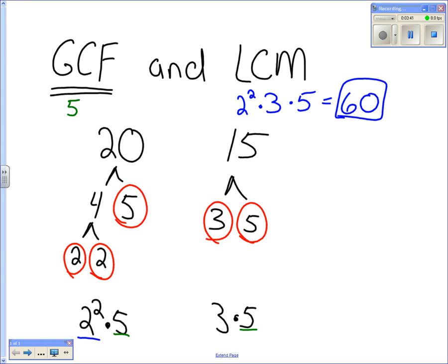We took the 2², we took the 5, then we took the 3. Okay. Remember, this is bigger than 15 and 20. So, we're looking for the bigger number for the LCM. Okay. The 60 is bigger than both 20 and 15. The greatest common factor, 5, is smaller than 20 and 15. It's the smaller number.